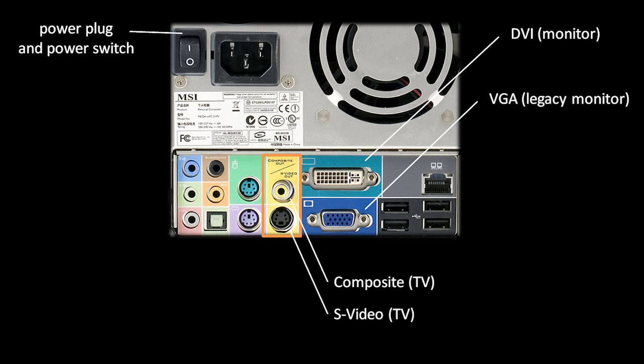On this particular computer, we happen to have outputs to send an image to a television. You probably recognize these from the back of televisions, VCRs, and DVD players. The one on top is called Composite and the one on the bottom is called S-Video. These are also examples of legacy technologies, being phased out in favor of newer standards like HDMI.